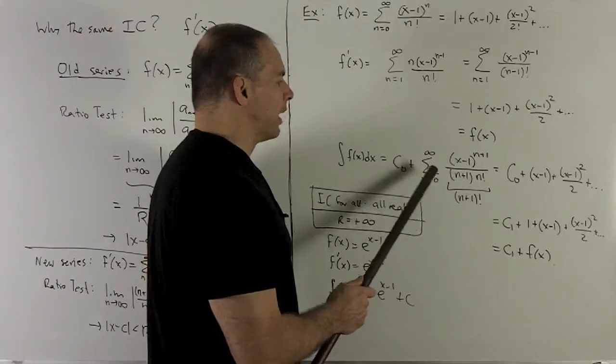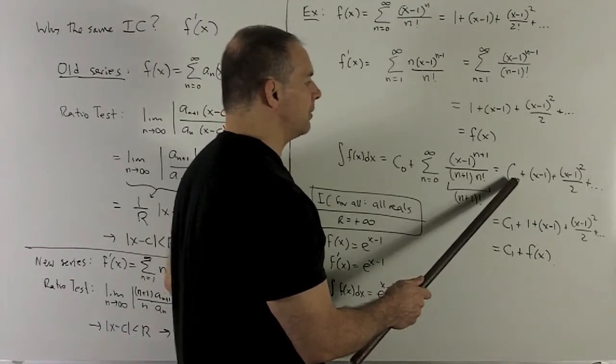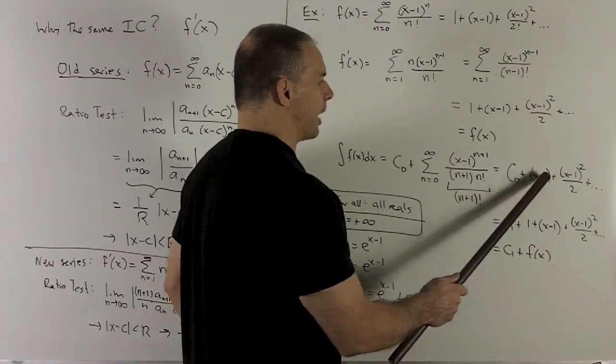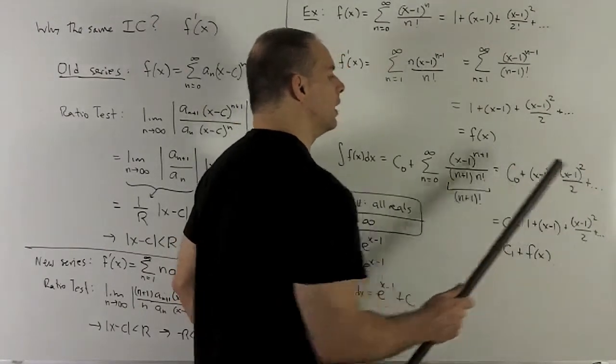So, what happens now? If I write out the first few terms, we're going to be looking at our constant of integration. If we put a 0 into there, I'm going to get x-1, (x-1)^2/2, and so on. So what do you know?